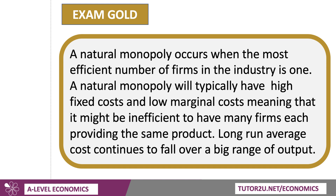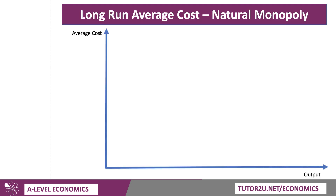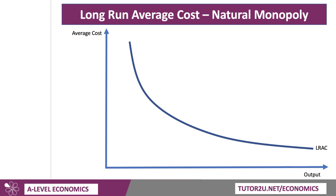That can often lead to the fact that it's inefficient to have lots of firms each competing with each other, providing the same product, because the shape of the average cost curve is that it falls over a big range of output. So here's our average cost against output — I'm going to ignore marginal cost here, just think about the average cost diagram. That's the shape of the average cost curve for a natural monopoly.